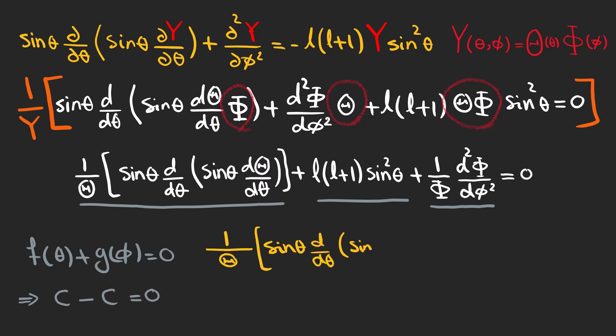This one is the theta dependent function. And this one is the phi dependent guy. They have to be constant and cancel out and we decide to choose m squared as our constant.